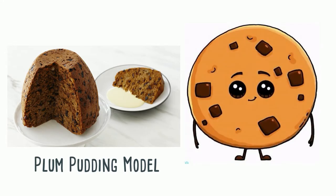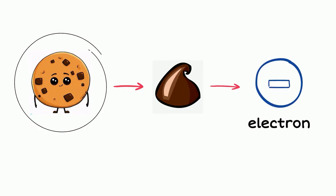Well, some call it chocolate chip cookie model. In this comparison, the chocolate chips are the negatively charged particles, which we now know as electron.